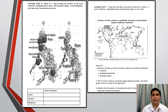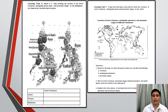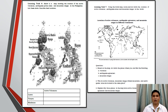For learning task number 7, using the world map, locate and list down the location of active volcanoes, earthquake zones, and mountain ranges in the world. You can find the world map with the location of active volcanoes, earthquake epicenters, and mountain ranges in different continents. After locating and marking these geologic processes and features, please answer questions 1 to 3 after the map.